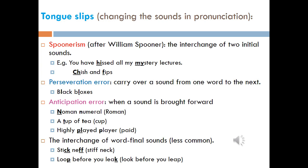With tongue slips, you change sounds in pronunciation. For example, spoonerism is the interchange of two initial sounds — for example, 'you have hissed all my mystery lectures,' or 'chish and fibs' instead of 'fish and chips.'